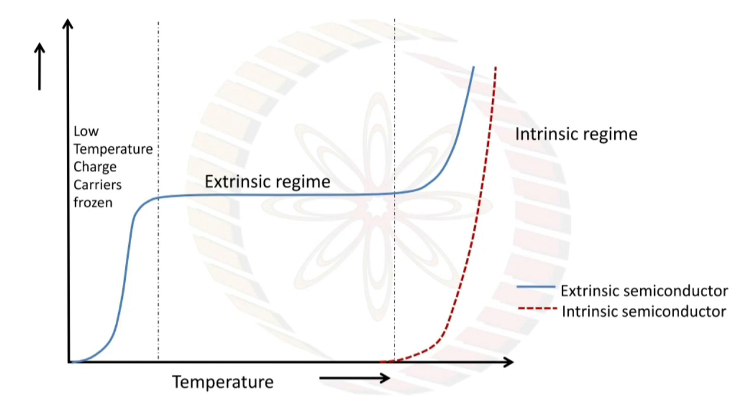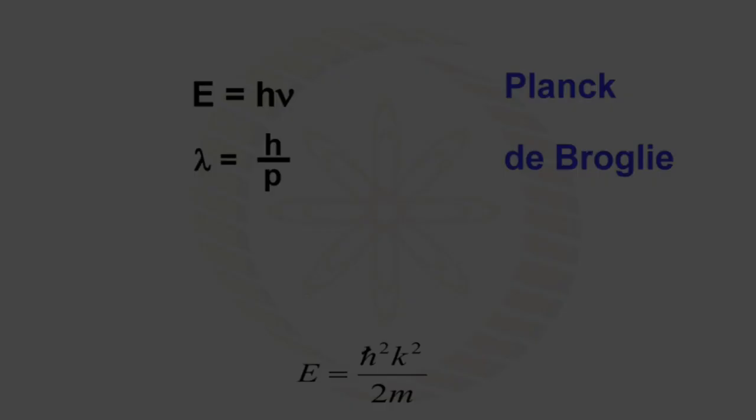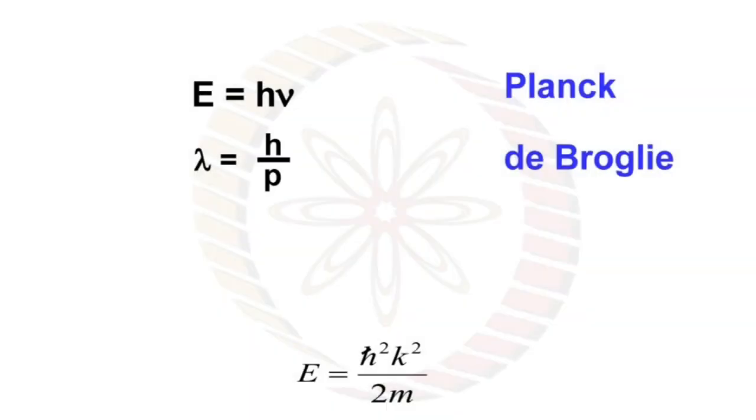Now the temperature characteristics of extrinsic and intrinsic semiconductors are shown in this graph. Planck and de Broglie gave two equations: Planck gave E equal to h nu, and de Broglie gave lambda equal to h upon p. By using both, we can prove that E equal to h squared k squared upon 2m.